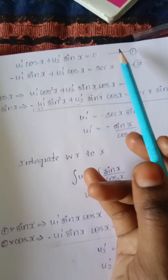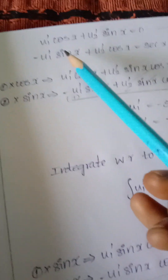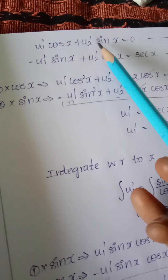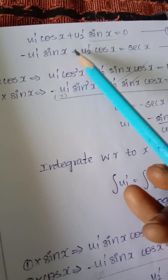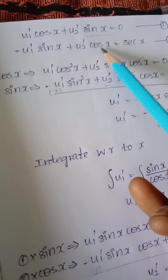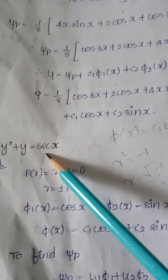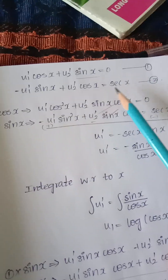Differentiating and applying the second condition gives the second equation: u₁'(−sin x) + u₂'cos(x) = sec(x). So we now have two equations — the first being u₁'cos(x) + u₂'sin(x) = 0, and the second being −u₁'sin(x) + u₂'cos(x) = sec(x).